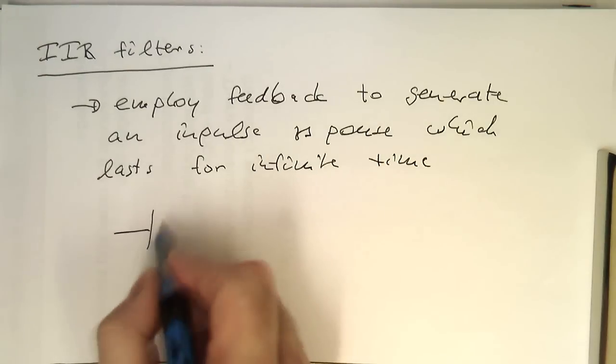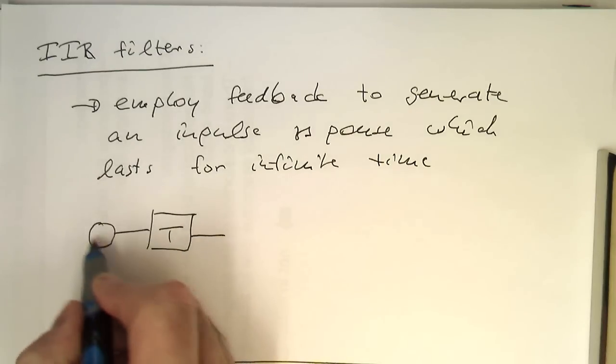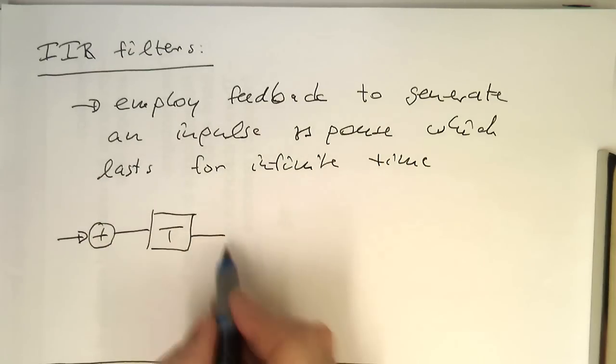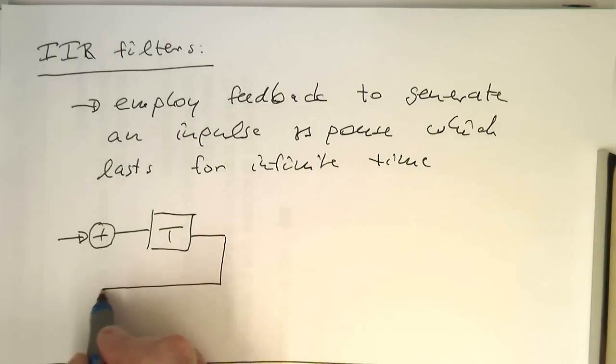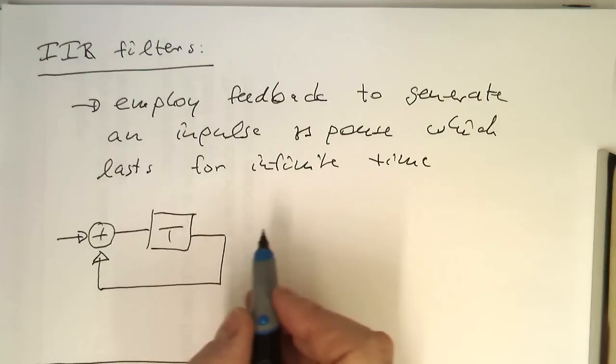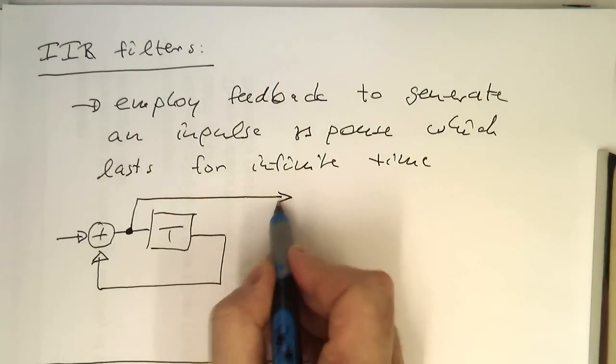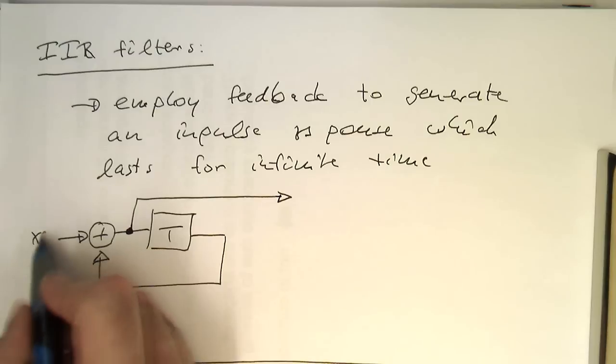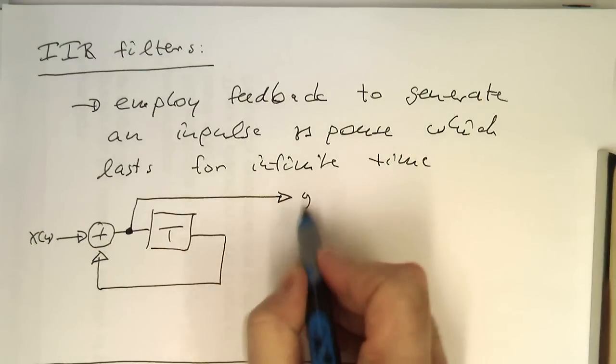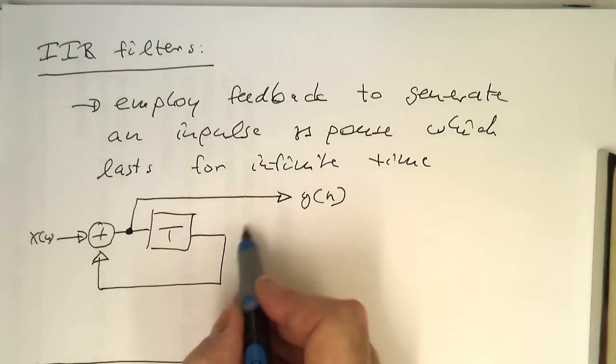The simplest IIR filter would be just one delay step. What we're doing is we send this output, which is a delay step back to the input, and then create our output here. Something like this: X of N, and then Y of N—we're creating feedback here.